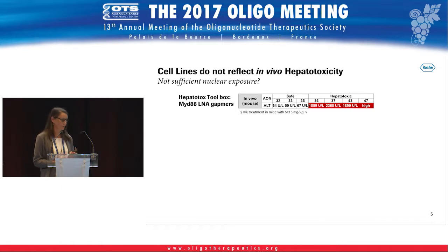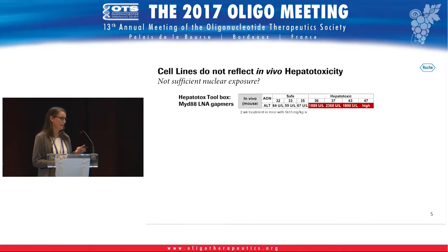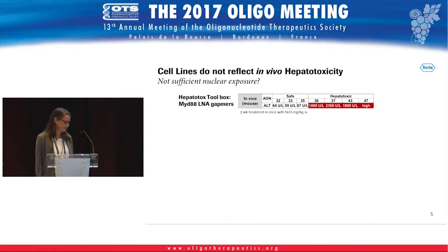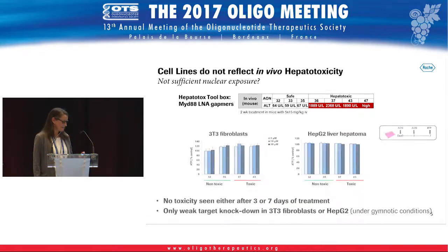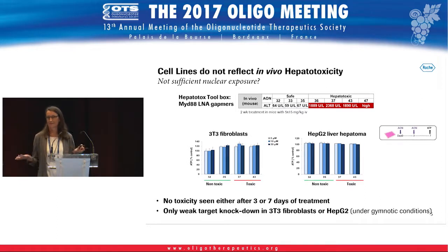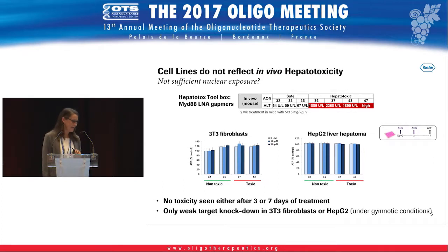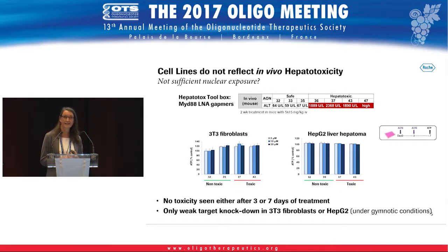We selected seven different oligonucleotides — LNA gapmers directed against one target, MITE88. We had three safe molecules that didn't raise any ALT in a two-week mouse study, while four very hepatotoxic molecules showed a dramatic increase in ALT levels. We tested them first in a regular cell line — 3T3 fibroblasts and HepG2 cells — treated for up to seven days with re-treatment after three days, and looked for cytotoxicity assessed by ATP levels. We didn't see any effect of the toxic oligonucleotides.